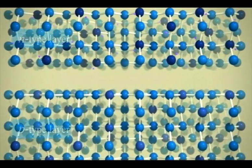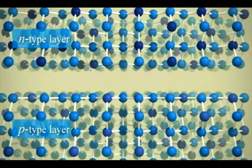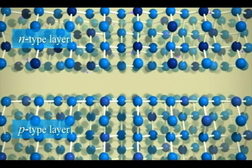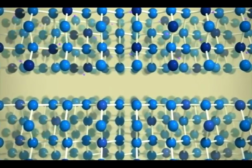At the heart of conventional solar cells are two special semiconductor layers. One is called an n-type layer and the other a p-type layer.